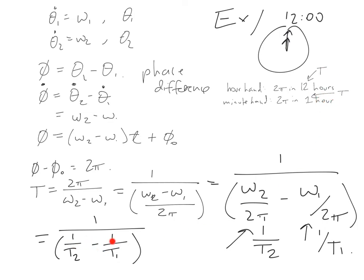So we have 1 minus 1 twelfth, which gives us 11 twelfths. So we get 12 elevenths for the time. 12 elevenths is 12 elevenths of an hour, so it's 1 hour and 1 eleventh of an hour worth of minutes.